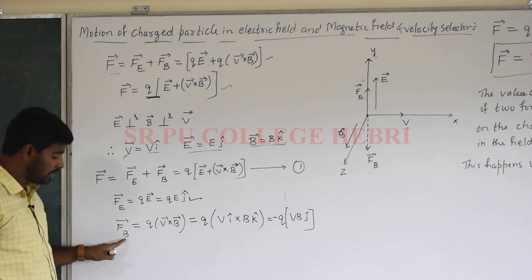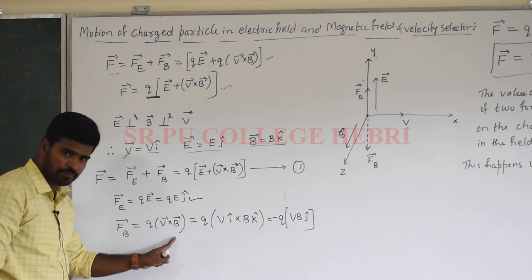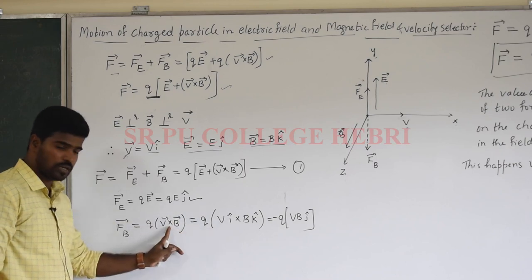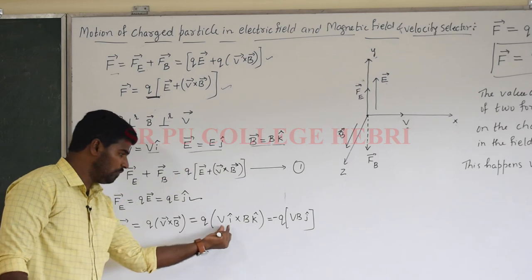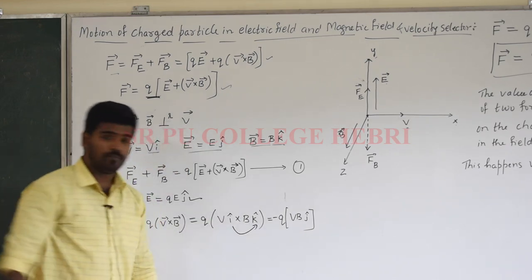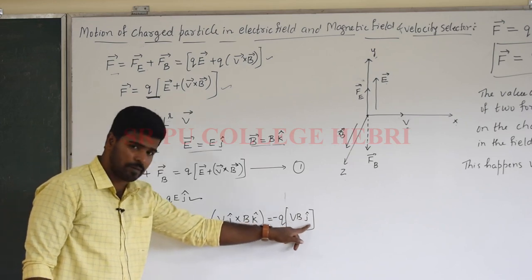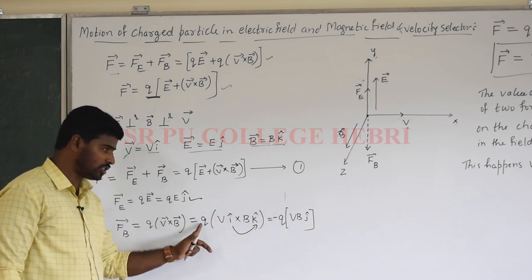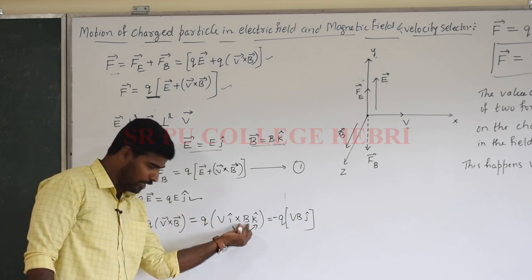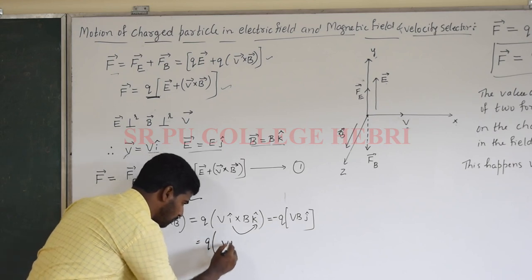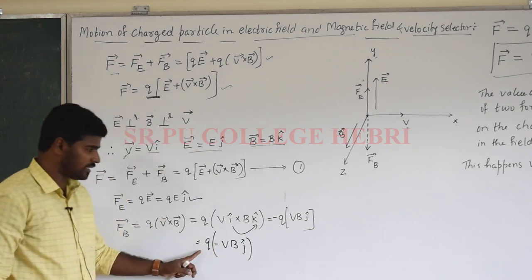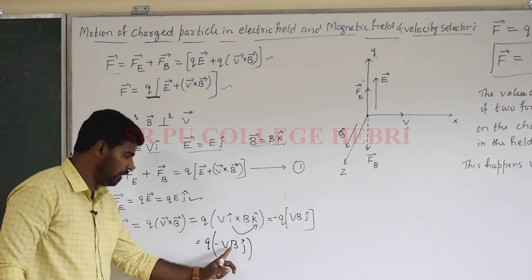The magnetic force on the charged particle is F_B = Q(v vector cross B vector) = Q times (V i-cap cross B k-cap). Now computing the cross product: i-cap cross k-cap = minus j-cap. Therefore F_B vector = Q times V times B times (i-cap cross k-cap) = minus Q V B j-cap. The minus sign comes out as outside, giving F_B vector = minus Q V B j-cap.